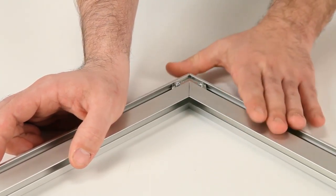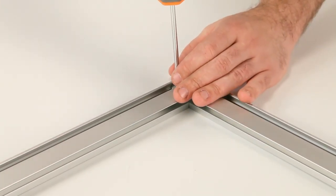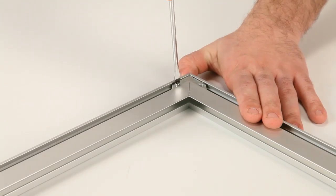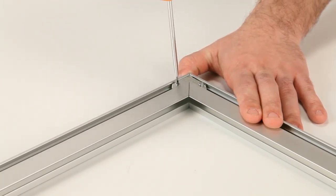Then connect the other end of the plates to another large frame rail using the same method. Use a flathead screwdriver to tighten the screws of the top corner joining plate.